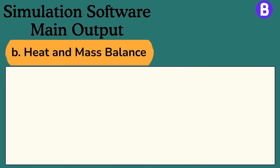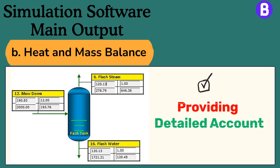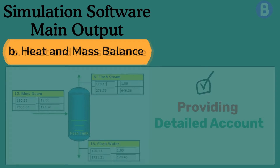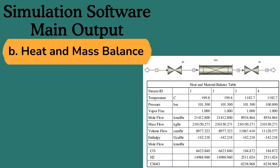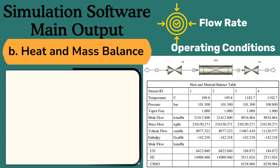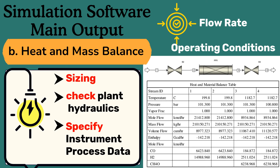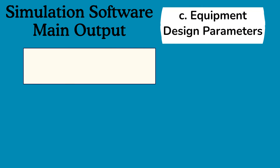Heat and mass balance is a fundamental output of process simulation software, providing a detailed account of the flow of materials and energy throughout the plant. Through the heat and material balance table, we know each process stream's expected flow rate and operating conditions. We can use this data to carry out sizing activities of piping, check plant hydraulics, and specify instrument process data.